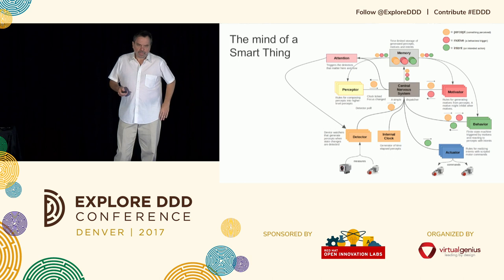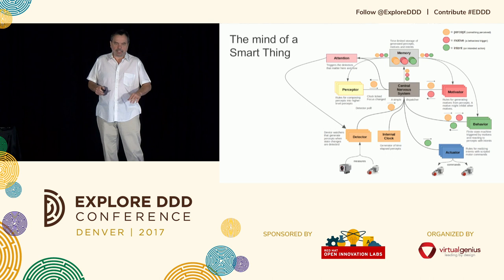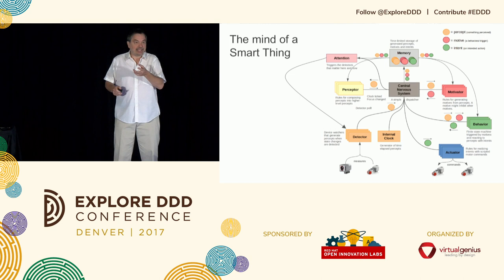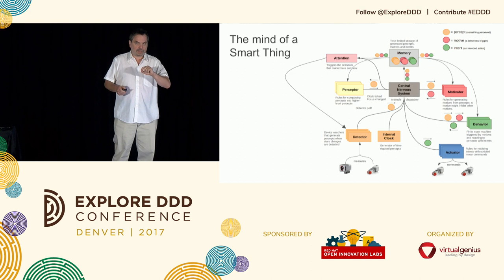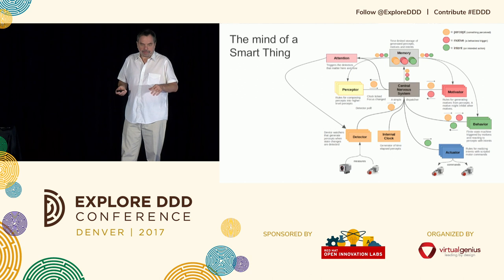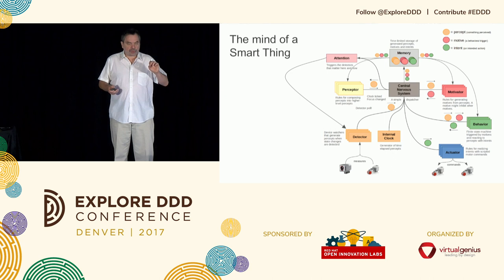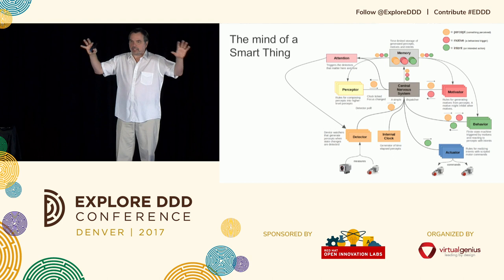Let's look into the mind of a smart thing. At the lowest level, we have detectors. Detectors pull sensors — and a motor is also a sensor because it can report its current speed and whether it's straining. The internal clock is also a detector — it detects the passage of time and is a critical element of the mind. Detectors generate percepts, and when they do, they communicate them to the central nervous system. The central nervous system connects all these agents together. Agents do not generally know of each other.